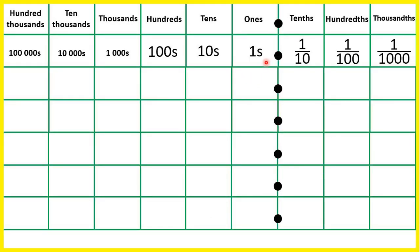Here we have a place value chart and we count place values from the decimal point. Our whole number place values are our ones, tens, hundreds, thousands, ten thousands, and hundred thousands. Our decimal place values are our tenths, hundredths, and thousandths.